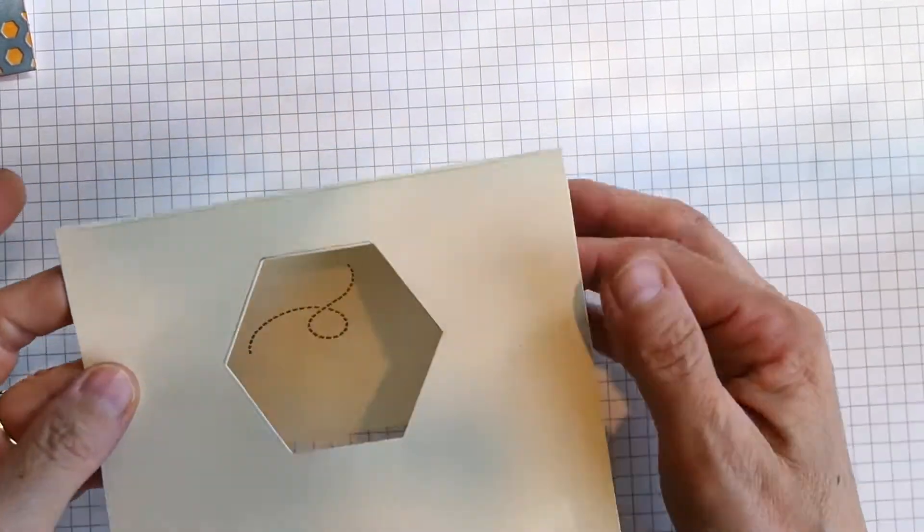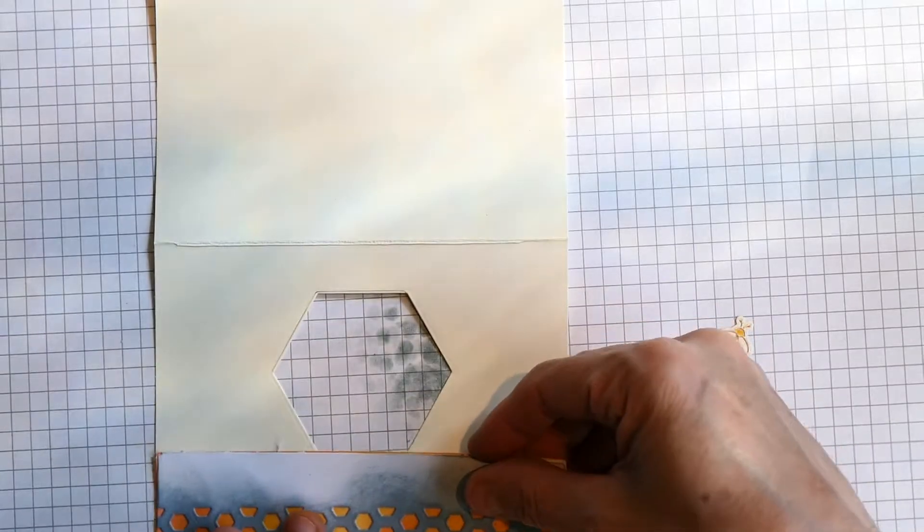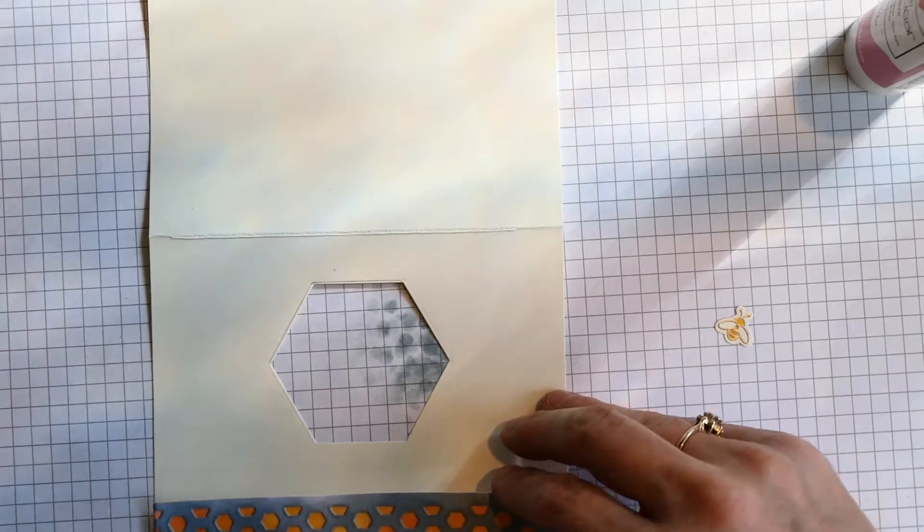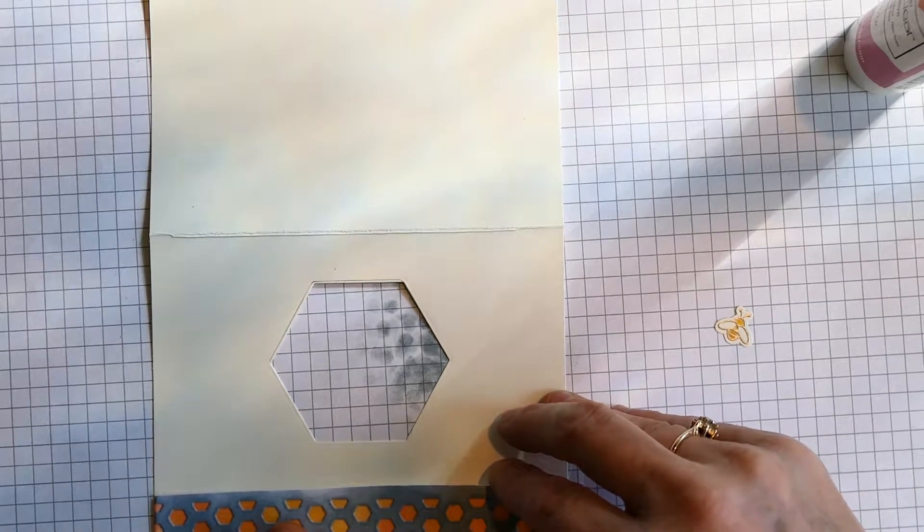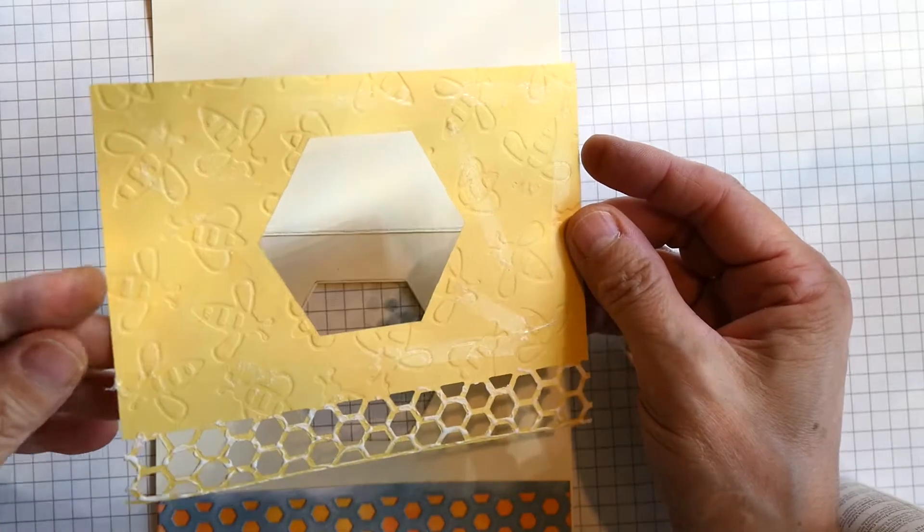At this point I had the bee trail and the hexagon cut out of the card base, and it was time to attach the base layers. I needed to cut it down, so I cut it by hand with scissors, then glued it on and put it under a little bit of weight to dry for a couple minutes.